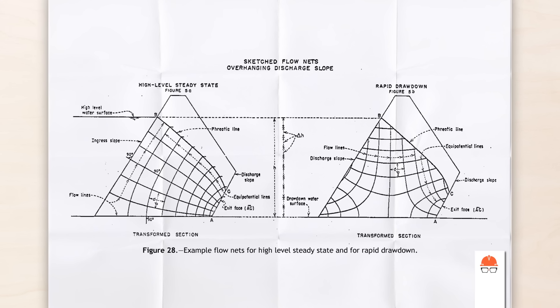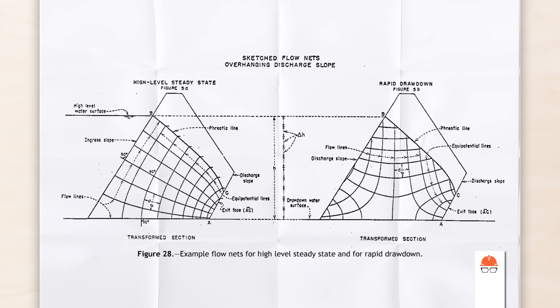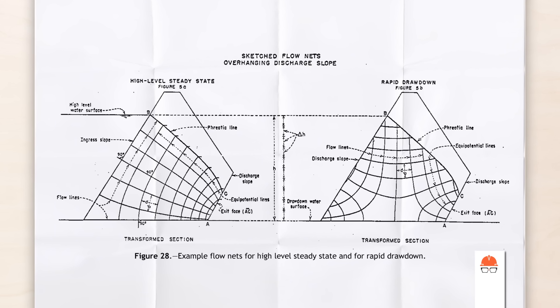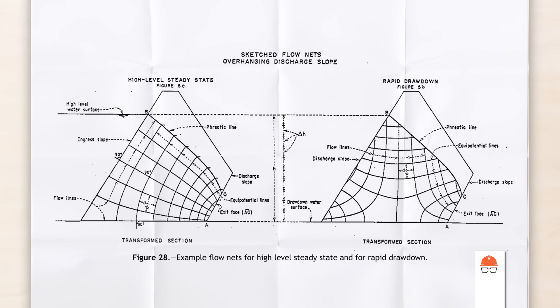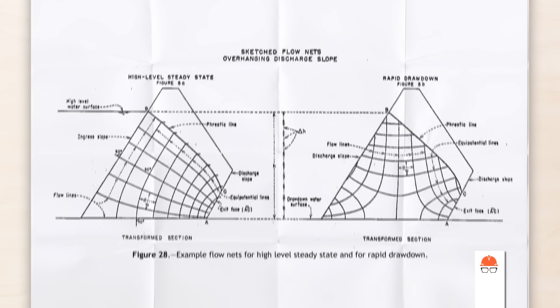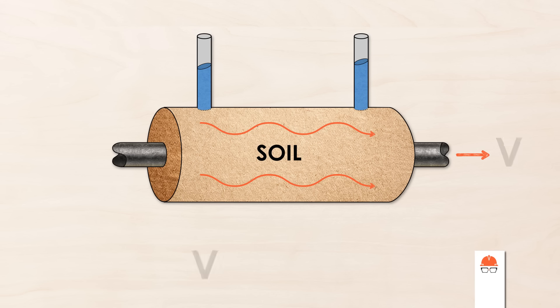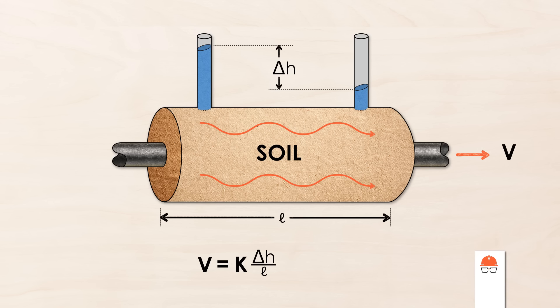Flow through soil follows Darcy's law, which is simple to understand but difficult to calculate in two dimensions. Before computer models, engineers used an analytical tool called a flow net to estimate the behavior of seepage. Now software can do the work more quickly and accurately. Darcy's law essentially says that the rate of seepage depends on the length of the flow path and the difference in pressure across it. The combination of these two factors is called the hydraulic gradient.